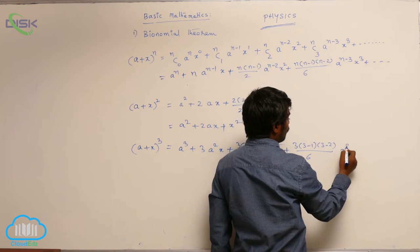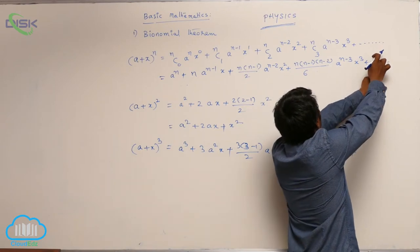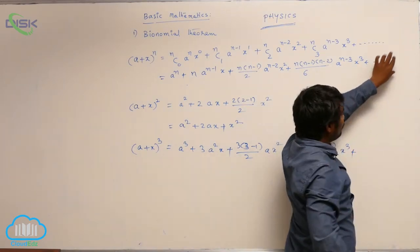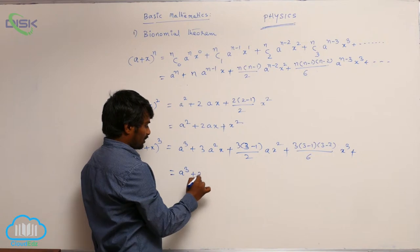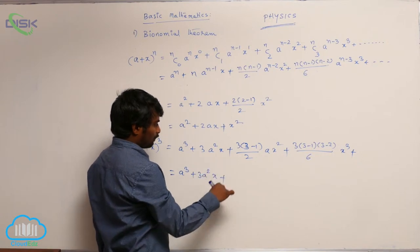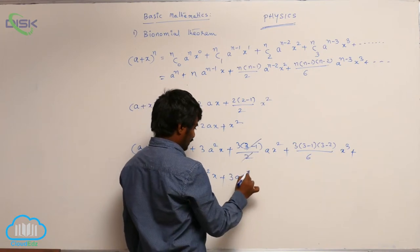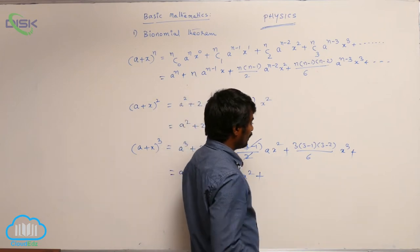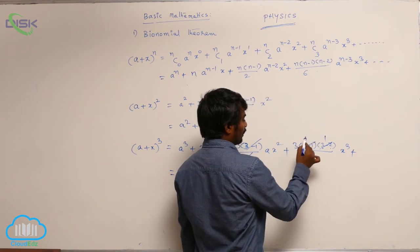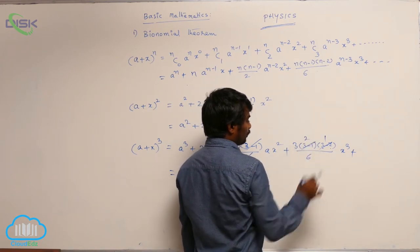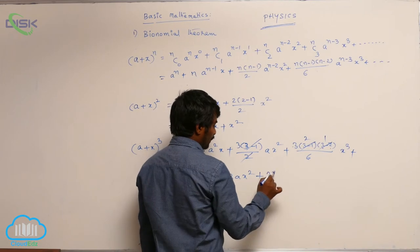a^0 is 1 times x^3. Plus, as I told you, the next term you are getting n(n-1)(n-2)(n-3), which will be 0. That is why no need to write further. So a^3 + 3a^2x + (3-1 is 2, 2 cancels) 3ax^2 + (3-1 is 2, 3-2 is 1, so 2×3 is 6, 6 by 6 is 1) x^3.